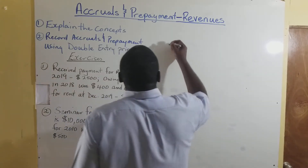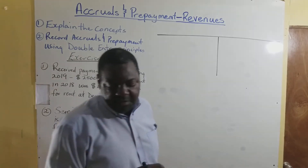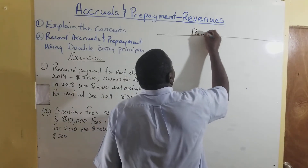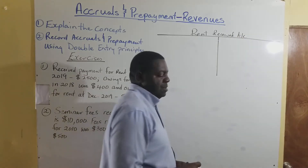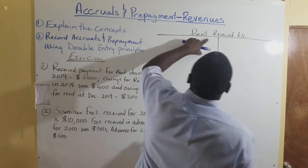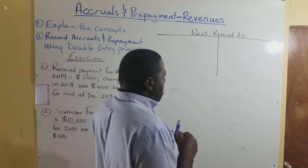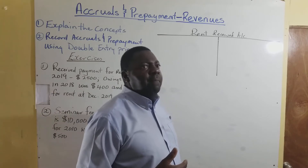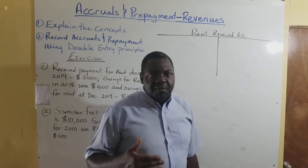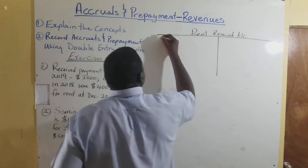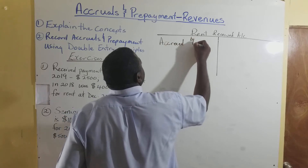Let's look at an example. Let us say we have a rent received account. Rent received is a revenue, and we're going to start by looking at accruals. In this account, if we have rent received owing at the beginning of the financial year, it becomes an asset. So we're going to have accrued BD on the debit side.